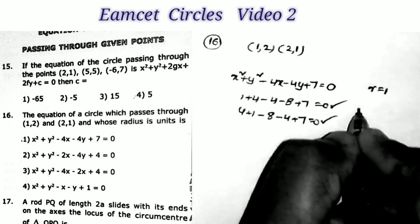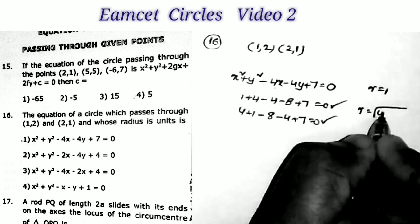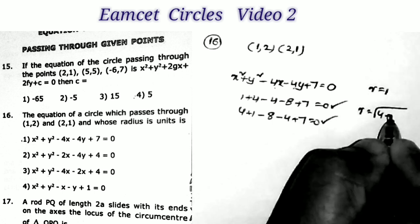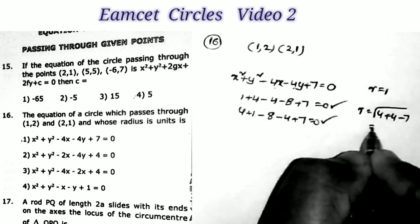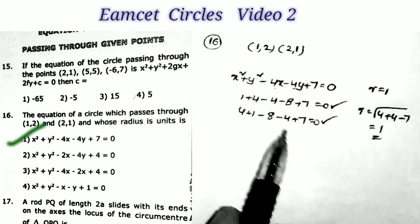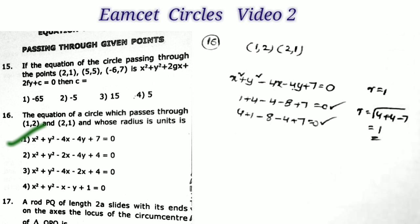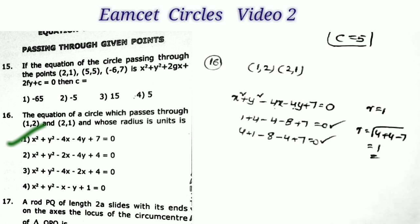Checking the radius: with g = 2, f = 2, c = 7, we get r = √(g² + f² − c) = √(4 + 4 − 7) = √1 = 1. All conditions are satisfied by the first option — both points lie on it and radius = 1. The other options do not satisfy all conditions. Therefore the answer is the first option.